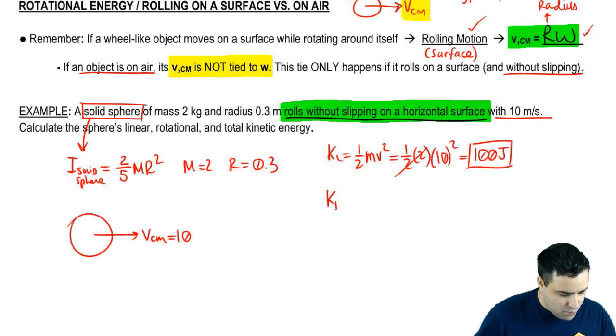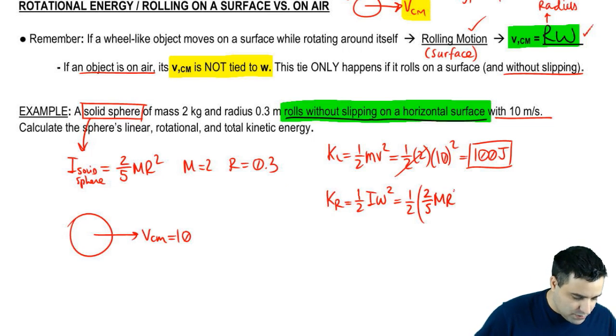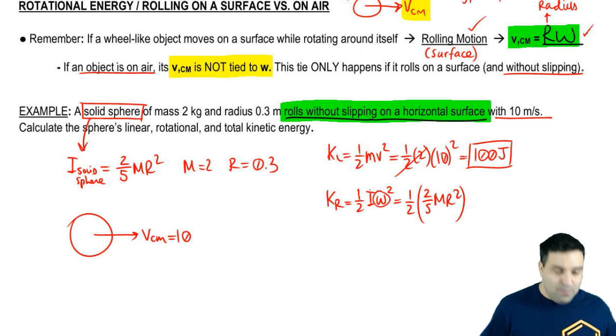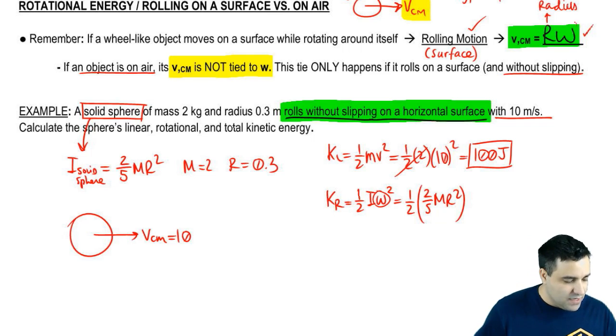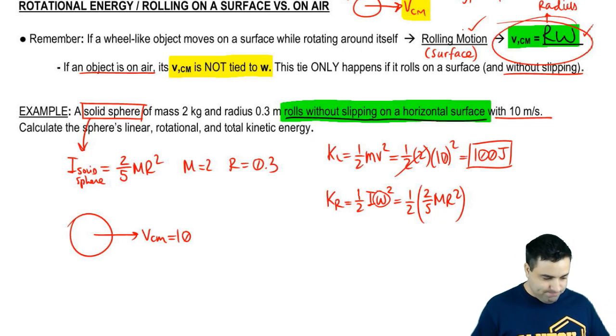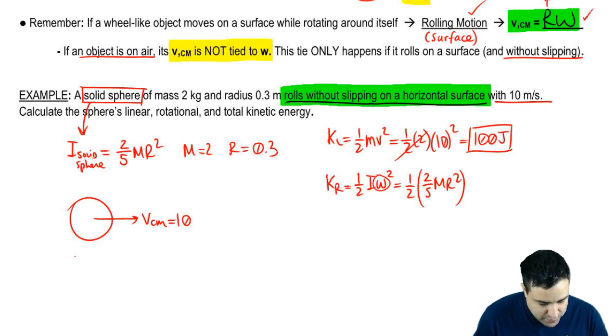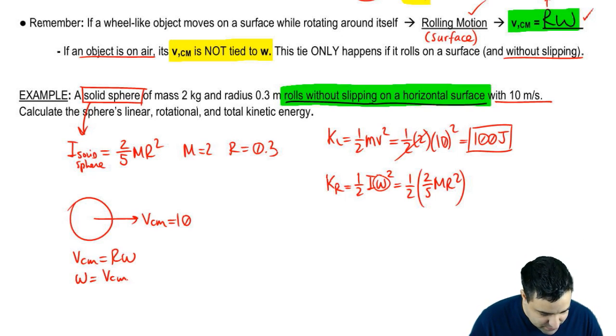For kinetic rotational, it's going to be half I omega squared. I have I. I is going to be 2 fifths mR squared. And I don't have omega, but I can get omega because I have a V. And these guys are related, connected by this equation right here. So let's do that real quick. So V_cm equals R omega. So omega is V_cm divided by R.